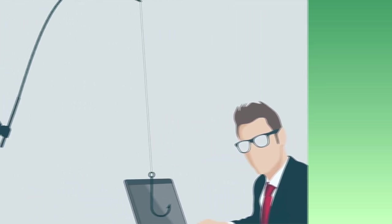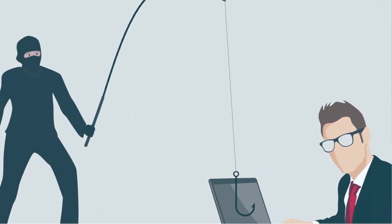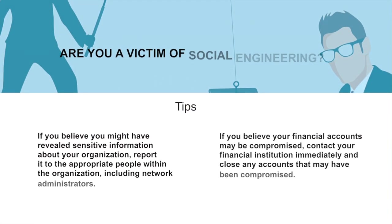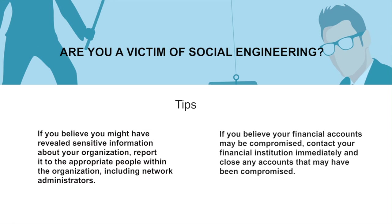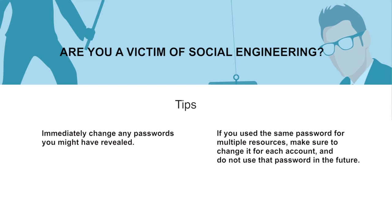Now let us discuss what to do if you think you are a victim of social engineering. If you believe you might have revealed sensitive information about your organization, report it to the appropriate people within the organization including network administrators, so they can be alert for any suspicious or unusual activity. If you believe your financial accounts may be compromised, contact your financial institution immediately and close any accounts that may have been compromised. Watch for unexplainable charges to your account, and immediately change any passwords you might have revealed. If you use the same password for multiple resources, make sure to change it for each account.